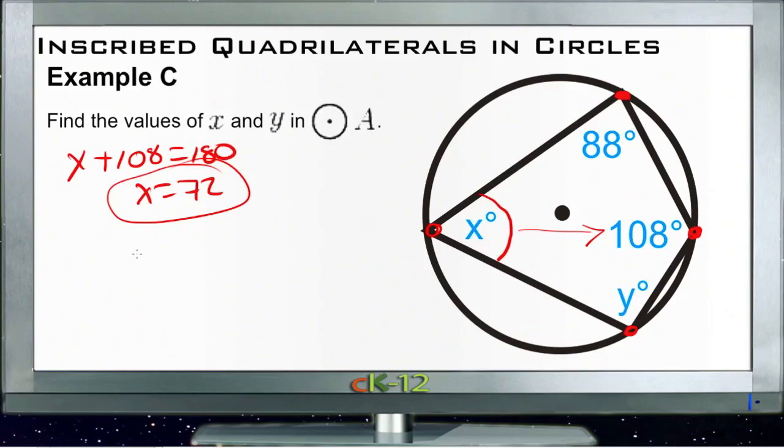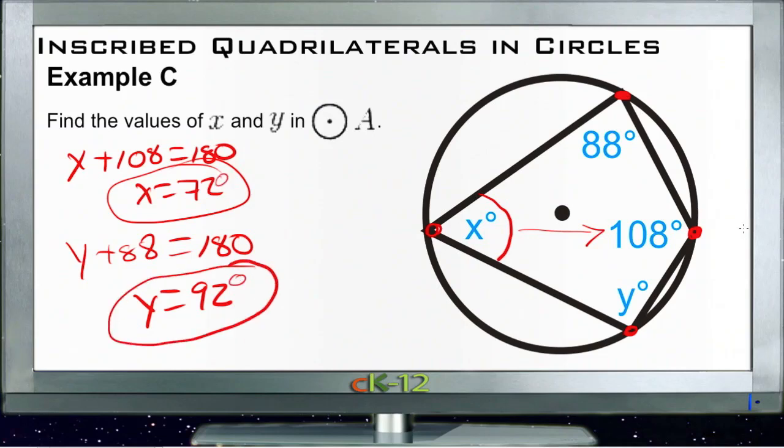And then y is opposite 88. So we have y plus 88 equals 180. So y equals 92. That was pretty quick. And we're done.